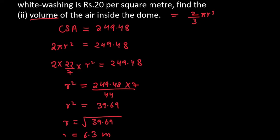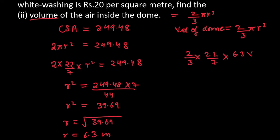Volume of the dome equals volume of a hemisphere = (2/3)πR³ = (2/3) × (22/7) × (6.3)³. We cancel: 7 cancels with 6.3 giving 0.9, and 3 cancels with 0.9 giving 0.3. Multiplying all values gives approximately 523.90 cubic meters. This is the answer for question number 8.